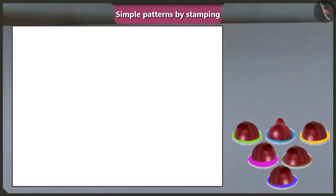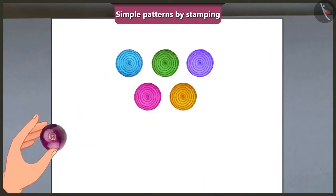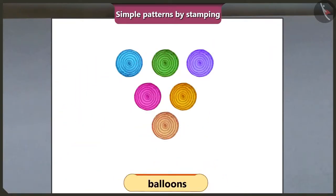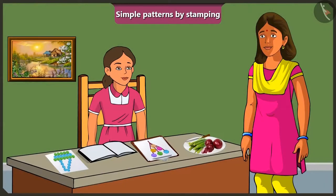Yes, Vinny. By dipping six pieces of an onion into six different colors, we can stamp them like this to make a balloon. Now, to show that these balloons are tied with threads, we can draw lines like this. Wow, this pattern looks really beautiful. Yes, mummy, can we also create a pattern by using both onion and lady's finger?